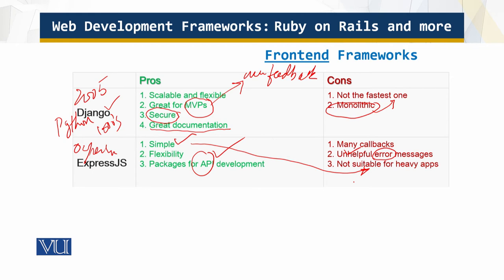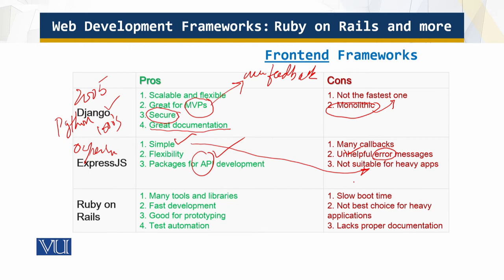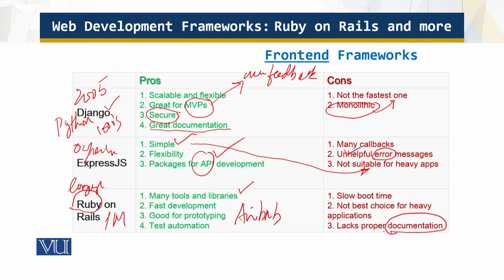Then we have Ruby on Rails, written in the Ruby language. It is used by around a million live websites, including Airbnb, Yellow Pages, Groupon, and many others. This framework has a wide spectrum of uses, including solving very complicated development problems and enabling fast development. However, documentation is not good — that is a notable con — and it is not a good choice for heavy applications.